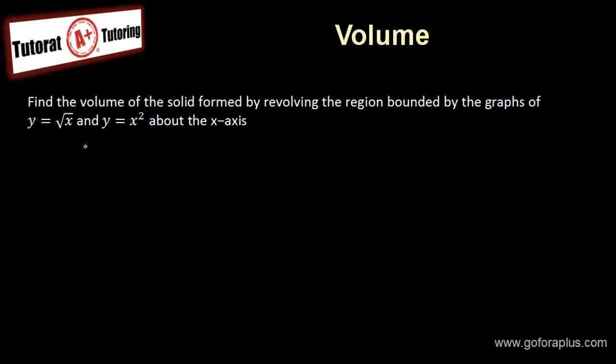So what does it mean? If you draw a picture, square root of x is basically like this. x-square is basically like this. So the area between them is right here. And then it's revolving about the x-axis. So I'm actually turning here. So this becomes a volume. So that will be the other part that is turning right here.